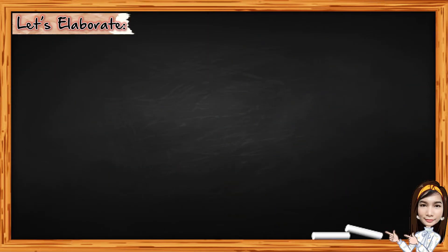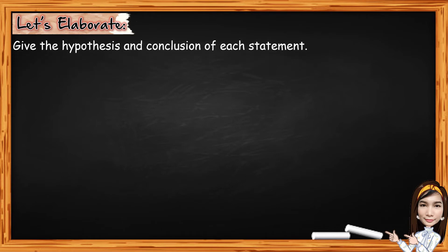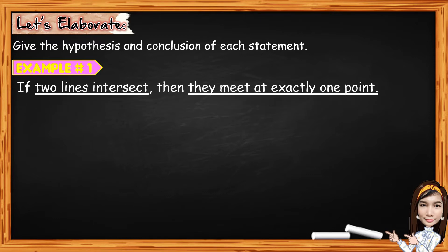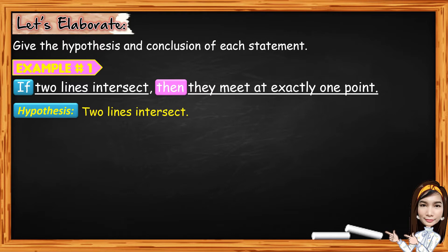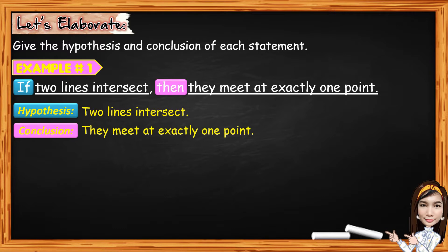For you to understand, let's give the hypothesis and conclusion of each statement. For example number 1, if two lines intersect, then they meet at exactly one point. We have the if part and the then part, written in the if-then form or conditional. For the hypothesis, the if part is two lines intersect, and for the conclusion, the then part is they meet at exactly one point.